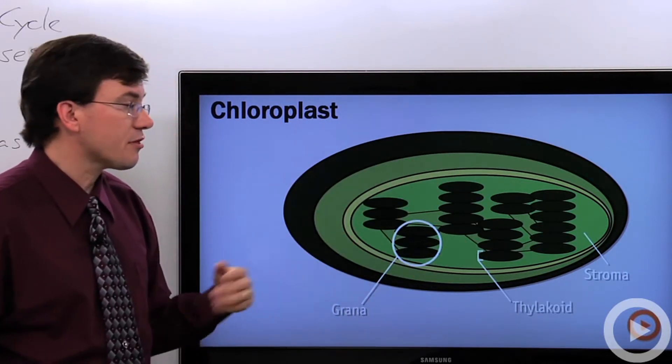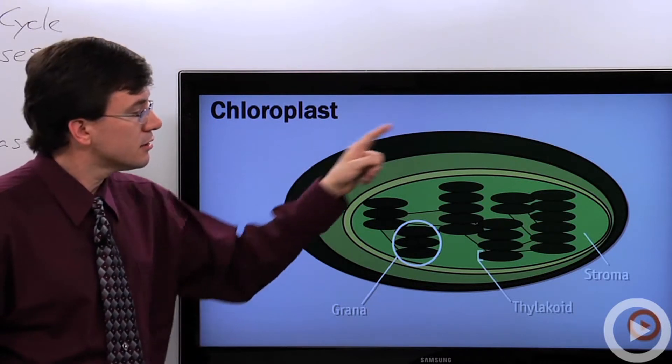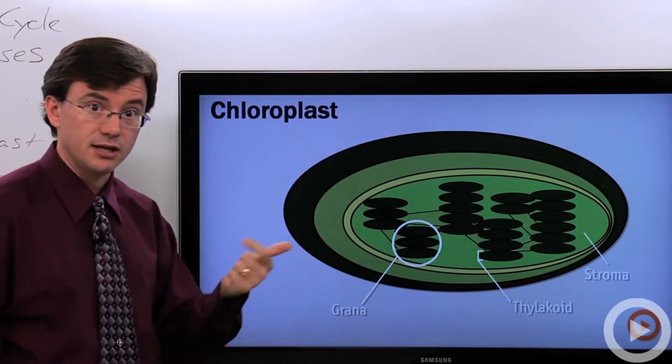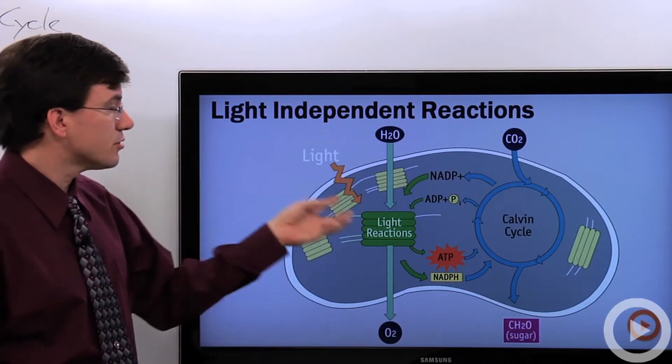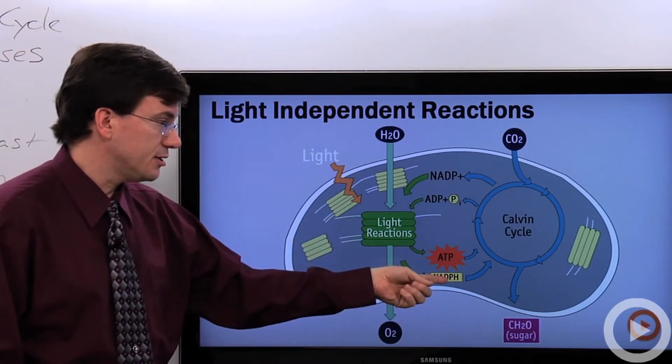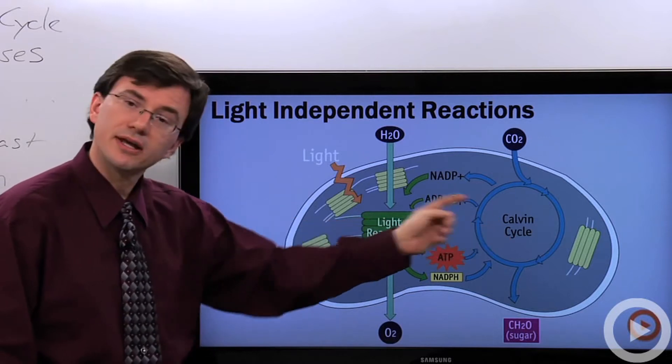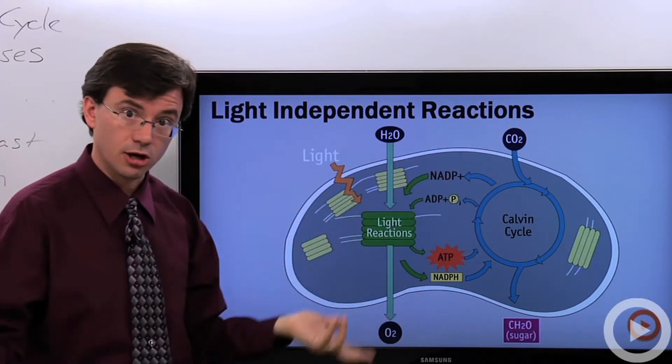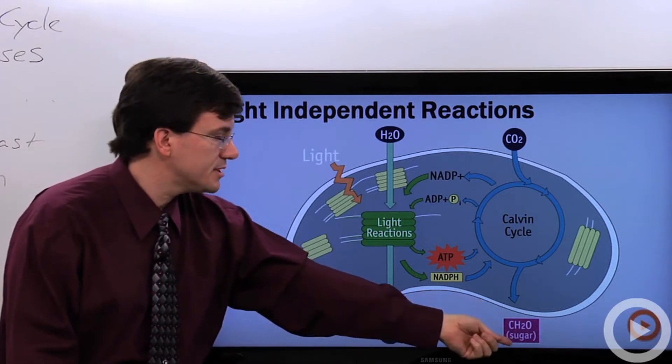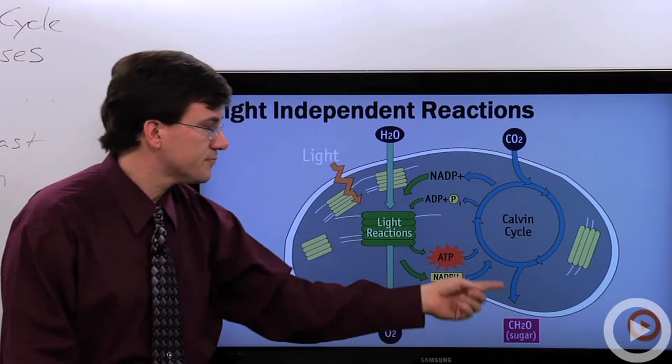The light-dependent reactions occurred on the thylakoid membrane. And they send their materials, the ATP and NADPH, to the stroma. And that's what we see going on here. So the light reactions are providing ATP and NADPH. And those are being consumed by the Calvin cycle as it takes in carbon dioxide from the air, does that carbon fixation I mentioned, and spits out some sugars.